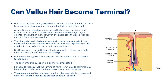One of the big questions you may have is whether vellus hair can turn into terminal hair. The answer is a bit complicated. Vellus hair is present on the bodies of both men and women. For the most part in women the hair remains slight, light coloured, and short. In men, however, the androgens that are produced can turn vellus to terminal. The change is particularly noticeable with facial hair, namely in the beard and moustache regions. At this stage in puberty you will also begin to grow hair in the armpits and pubic area.